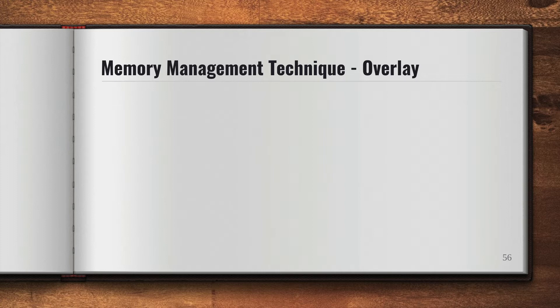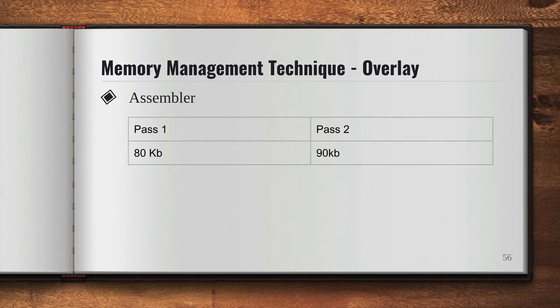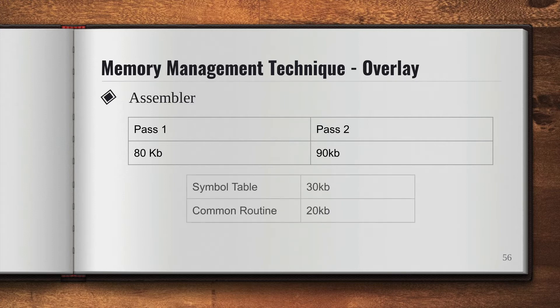Let's take an example. The best example of overlay is assemblers. Let's say there is an assembler having two passes: pass one and pass two. Pass one code size is 80 KB and pass two code size is 90 KB. As I mentioned earlier, certain parts of the program always need to stay in the memory for execution of different processes.